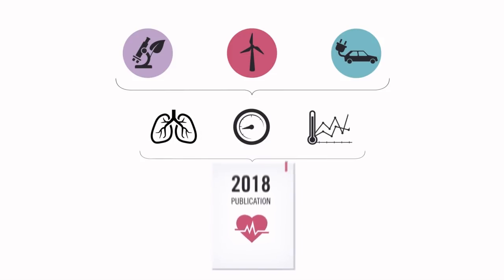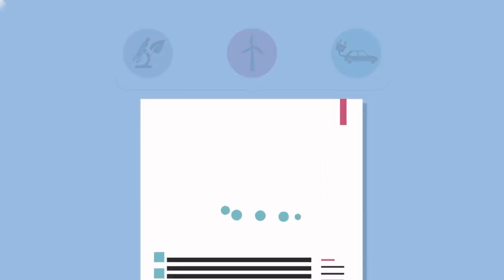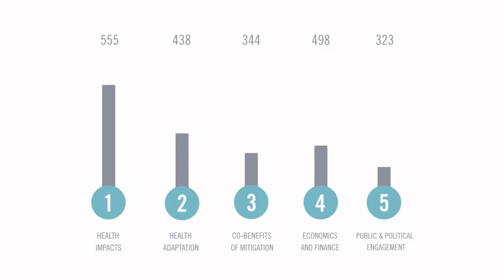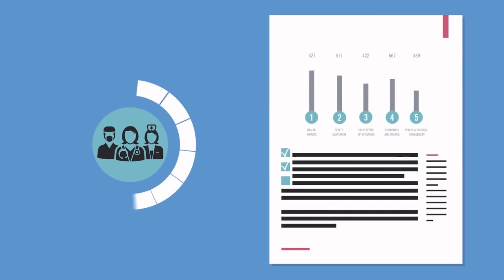The 2018 publication tracks 41 indicators across five key domains in health and climate change, continuously strengthening its methods, data, and analysis.